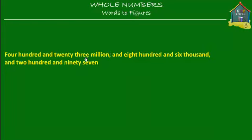We have 423 million — million is an important word, so we mark it and split there. Then we have 806,000 — thousands is again another important word, so we split there once more. Then we have 297. So we have three bits: 423 million, 806,000, and 297.